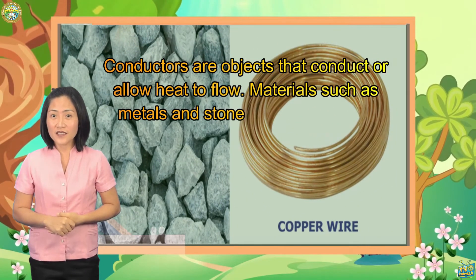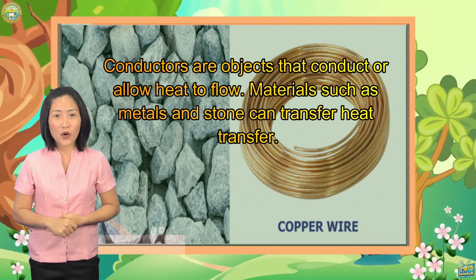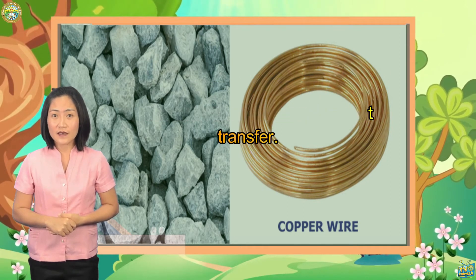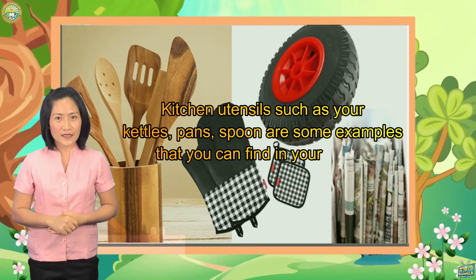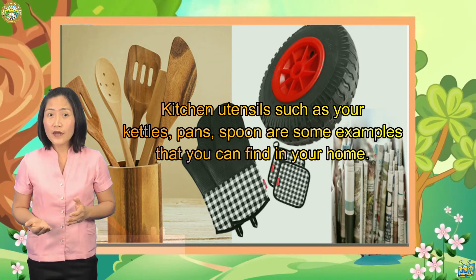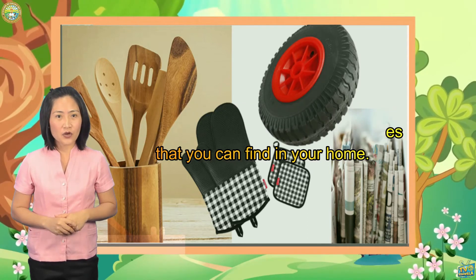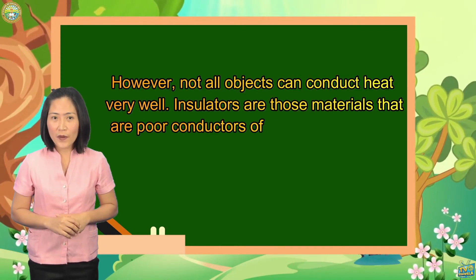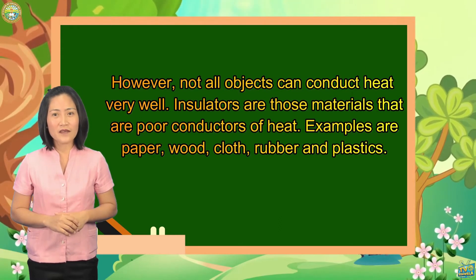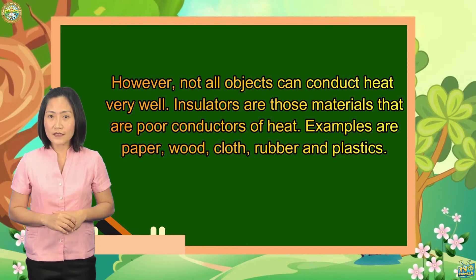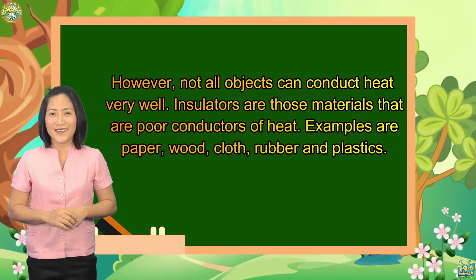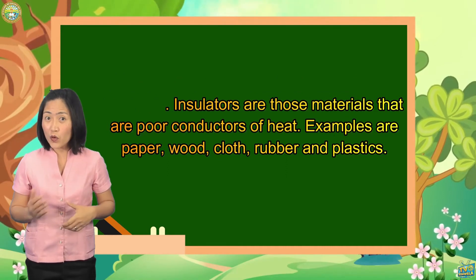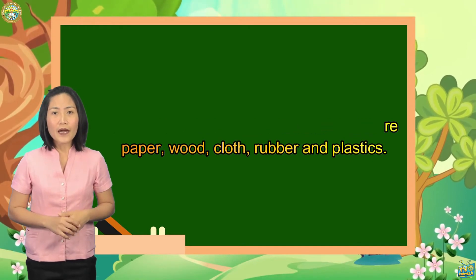Conductors are objects that conduct or allow heat to flow. Materials such as metals and stone can transfer heat. Kitchen utensils such as metals, pans, and spoons are examples that you can find in your home. However, not all objects can conduct heat very well. Insulators are those materials that are poor conductors of heat. Examples are paper, wood, cloth, rubber, and plastics.